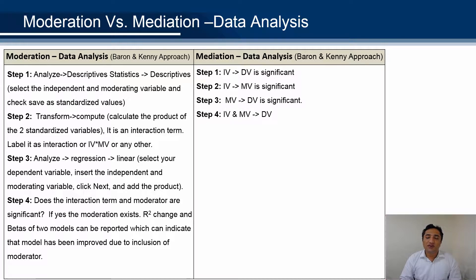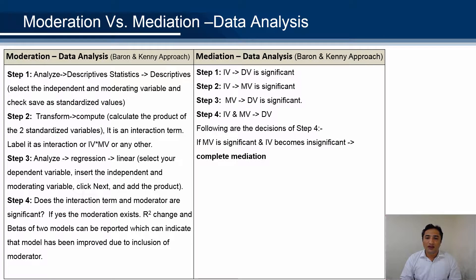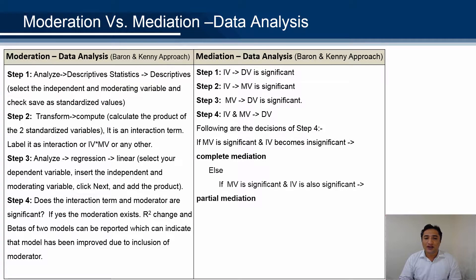In step four, both the independent variable and mediating variable should be significant on the dependent variable. Now, if the mediating variable is significant and the IV becomes insignificant in step four, then it is a complete mediation. And if the mediator is significant and the IV is also still significant, then it is called partial mediation.